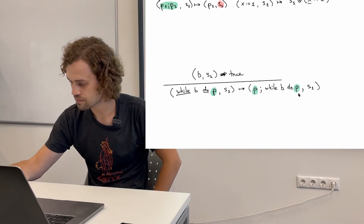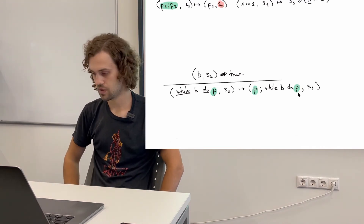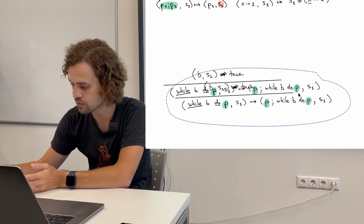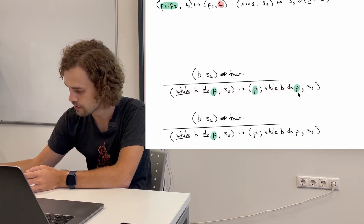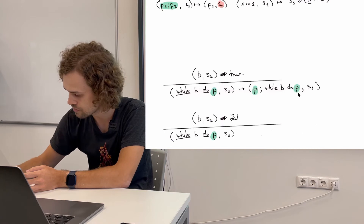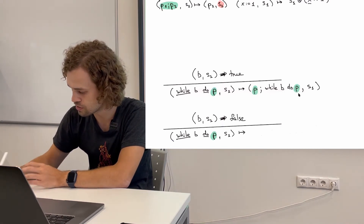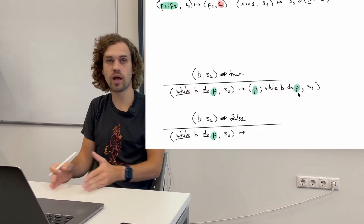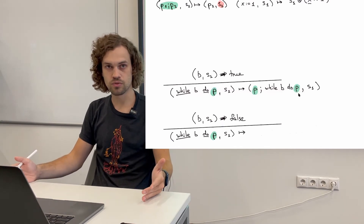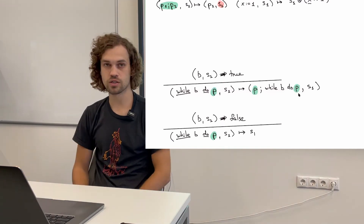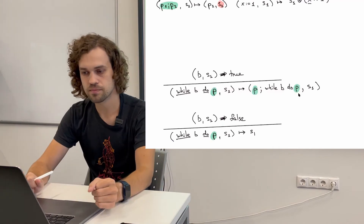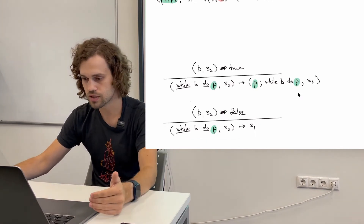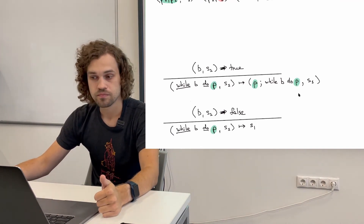This transition is only valid if what you put above the line holds — so we can only reduce this if b evaluated to true. Of course, this is only half of the while rules. The other case is when b evaluates to false. If the condition is false, we don't execute the body — we simply exit the loop and return s1 immediately. This gives us a complete formal semantics for the while construct.